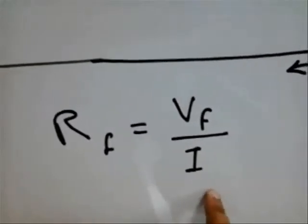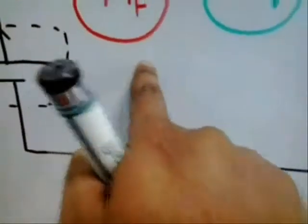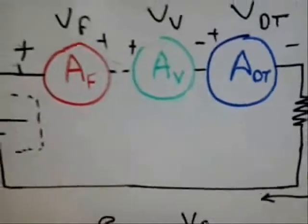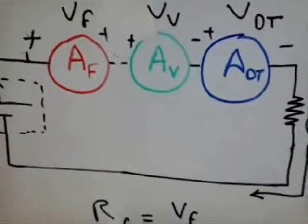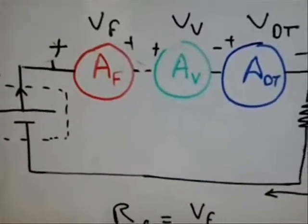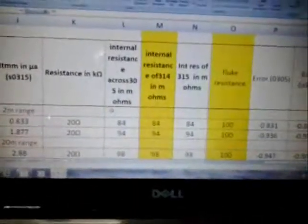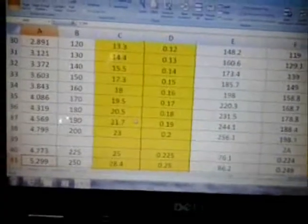And similarly we can find out the internal resistance of all these. So we have done this exercise for varying current and we have found the internal resistance.